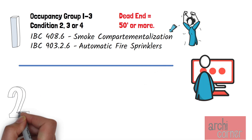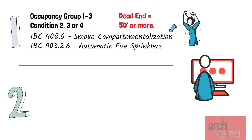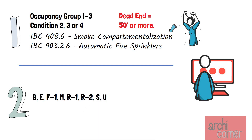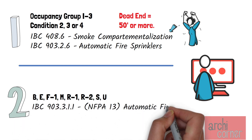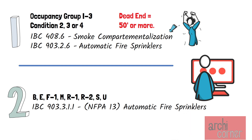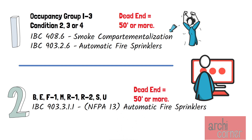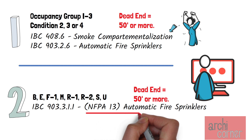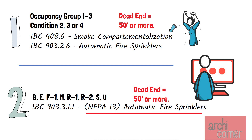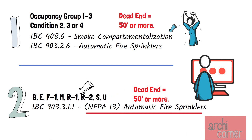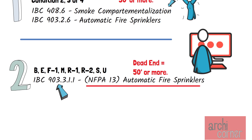Exception number two is if your project can be classified as an occupancy B, E, F1, M, R1, R2, S, or U, and is provided with an automatic fire sprinkler per IBC 903.3.1.1, then, like the first exception, you can extend the length of this corridor to 50 feet. It's because of this added feature of sprinkler systems that allows for this. Something to bear in mind is that occupancy groups R1 and R2 must meet the fire sprinkler requirements based on NFPA 13, not NFPA 13R, which is the IBC section noted earlier.